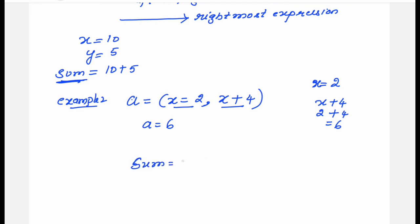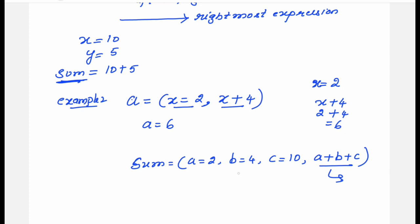Suppose you have a variable sum with more expressions: sum = (a=2, b=4, c=10, a+b+c). The rightmost expression here is a+b+c. But to get its value, all previous expressions must be evaluated first — that is how the comma operator works, with left-to-right associativity. So a=2, b=4, c=10 all get executed, and the rightmost expression 2+4+10 equals 16, so the value of sum is 16.